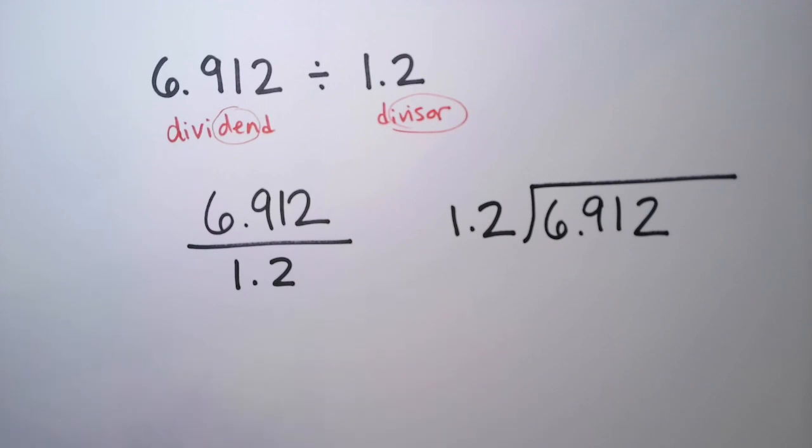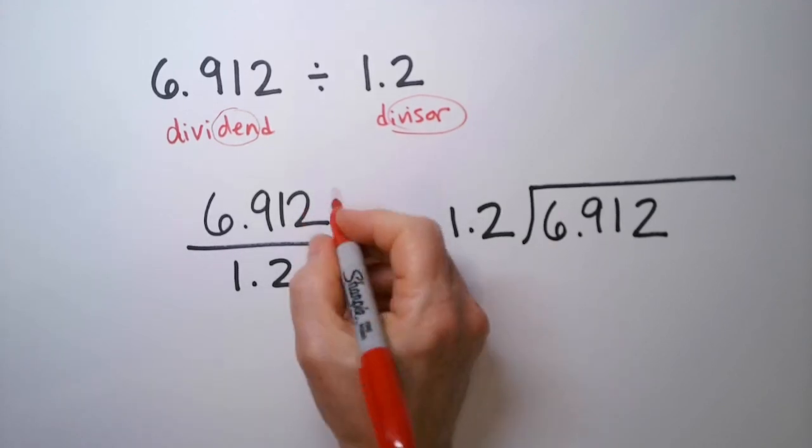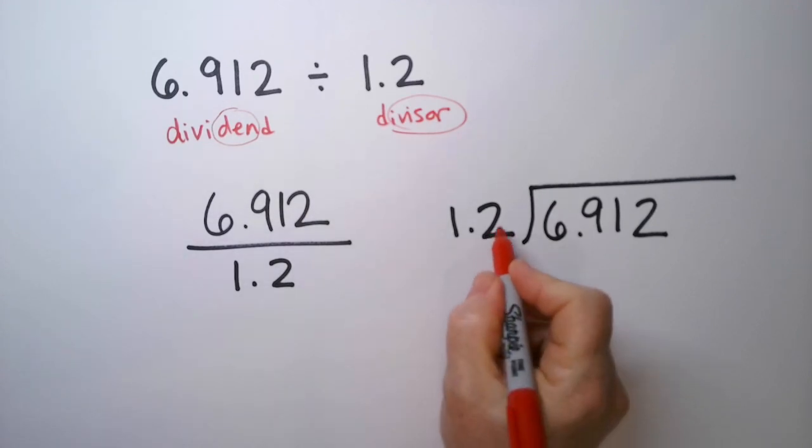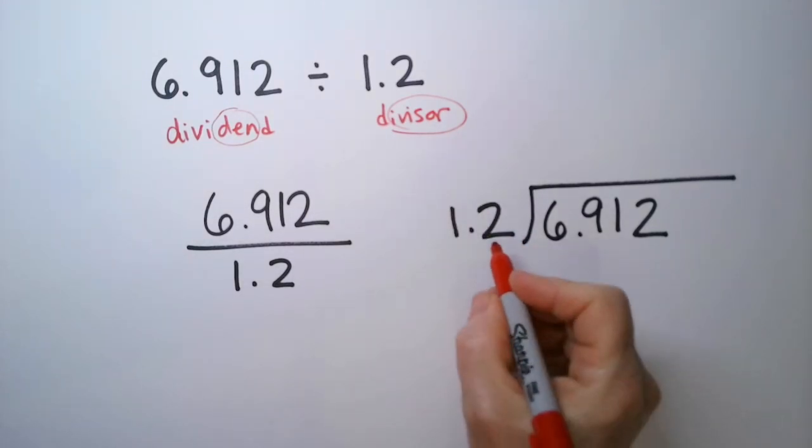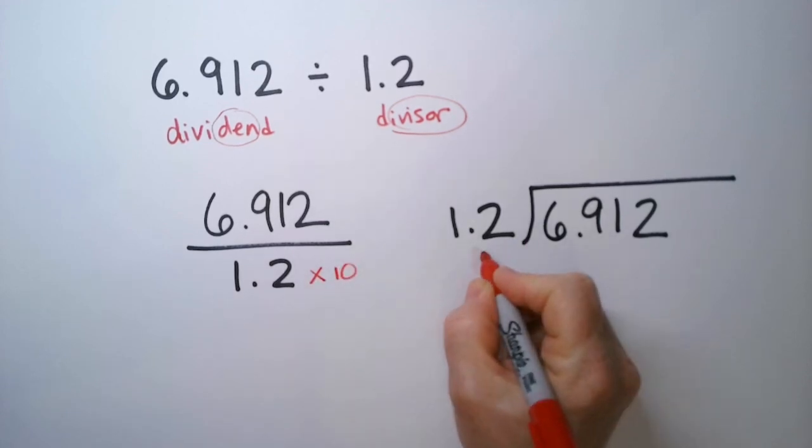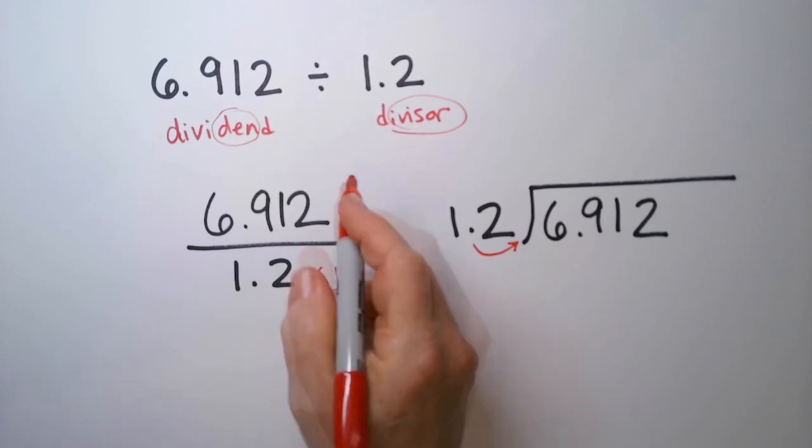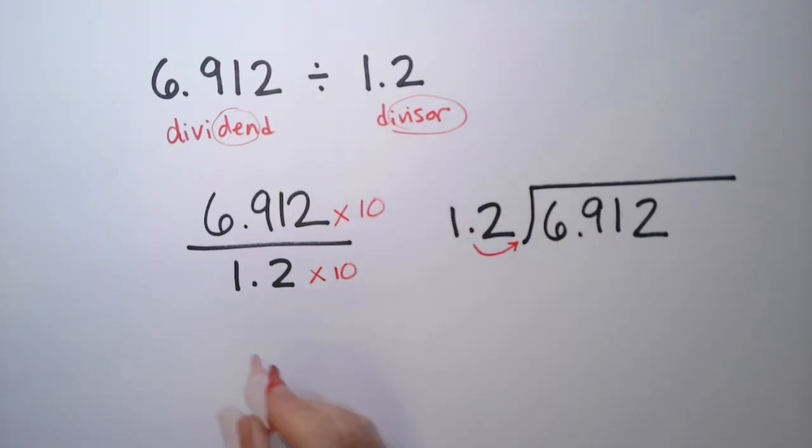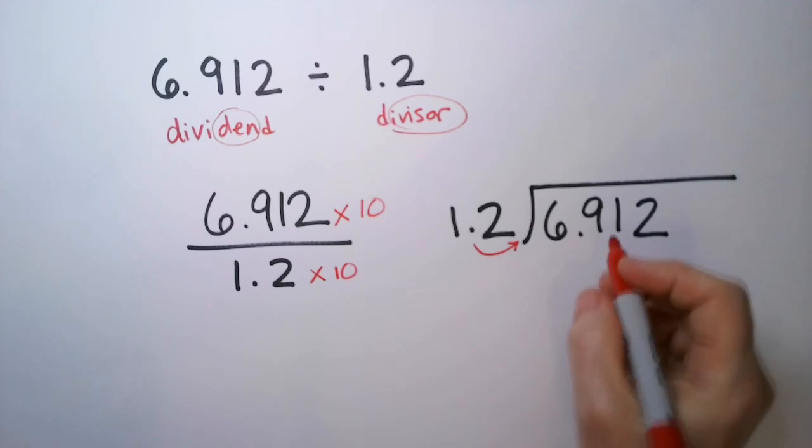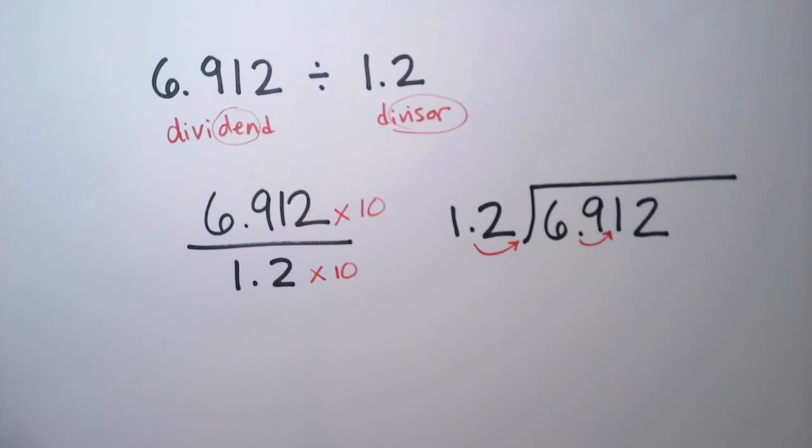In order to do this problem, I need to know my 1.2 times tables, but I don't. So instead what I'm going to do is multiply both the top and the bottom by however much I need to make this a whole number. Do you see how it's only going to take a multiplication of 10? That's going to move the decimal point over one hop. Whatever I do to the bottom, I've got to do to the top, otherwise I change the problem and you get a totally different answer. So that means I'm going to have to multiply this number by 10. Let's move it over one hop.